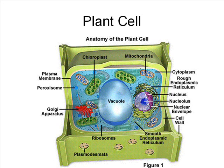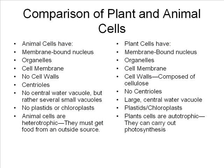The endoplasmic reticulum is often referred to as the conveyor belt of the cell, as the ER's main role is to move substances throughout the cell and modify them along the way. The Golgi apparatus is referred to as the UPS or FedEx of the cell, as it ships substances out of the cell. The lysosomes are referred to as the recycling centers, breaking down old cells and food for reuse. The chloroplasts are referred to as the solar panels, converting light energy into other types of energy. The vacuoles are referred to as the boxes or shipping containers, storing and helping to ship substances from one cell to another.